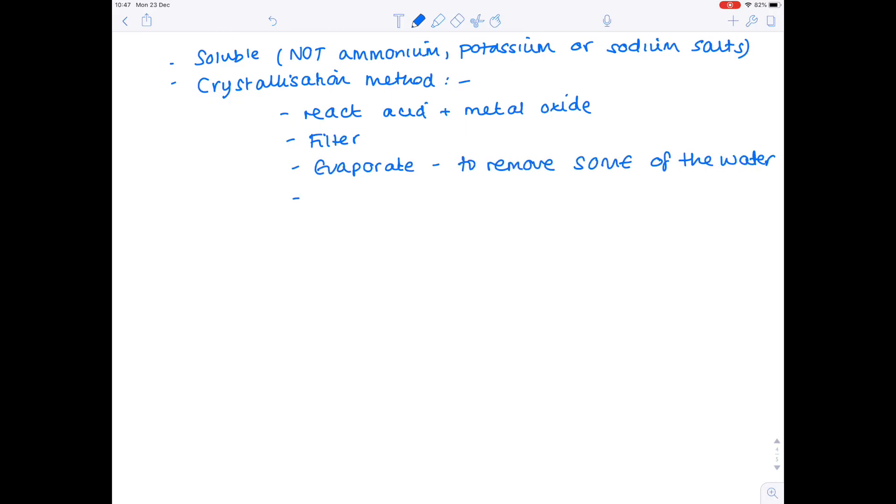Now, one of my least favourite topics is the manufacture of salts topic. It's really important that you can describe how various salts are made. Now, if you're being asked to make a soluble salt, notice that it can't contain ammonium, potassium, or sodium. And you use the crystallisation method. And the simplest way to describe this is that you react the acid, and most likely a metal oxide, because these are basically your ingredients needed to make the salt. Then you filter in order to remove any unreacted solid. You evaporate to remove, crucially, some of the water. And then you cool your solution and allow it to dry so that the crystals form. So dry in a warm place. Make sure you specify a drying method, or on filter paper, or in a drying oven.